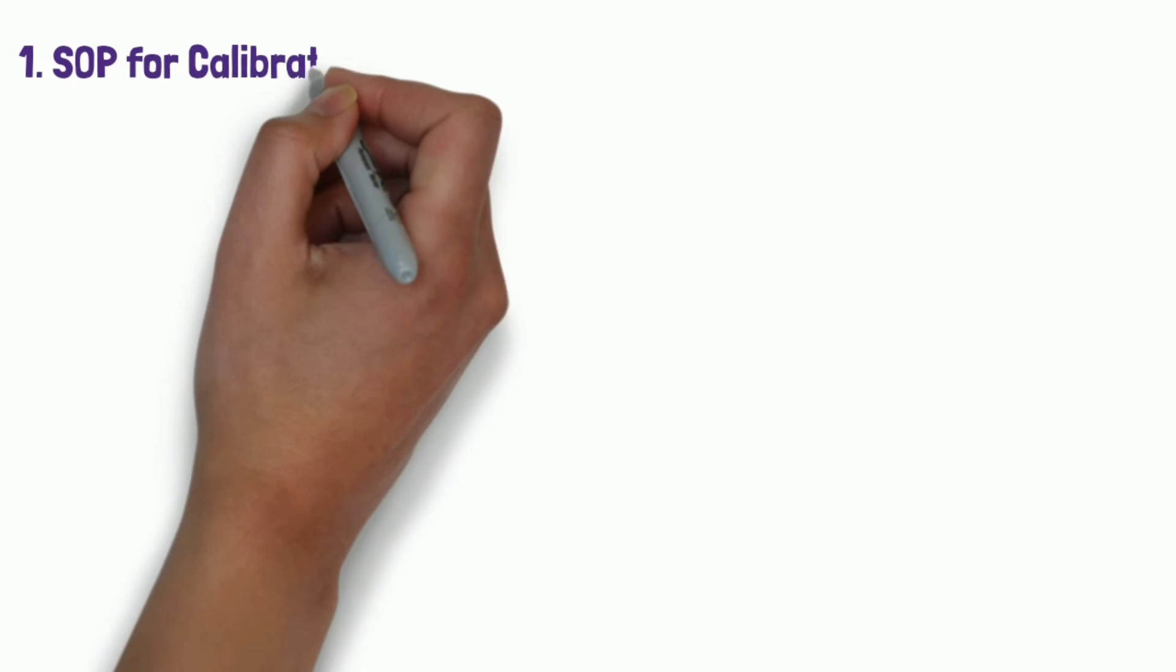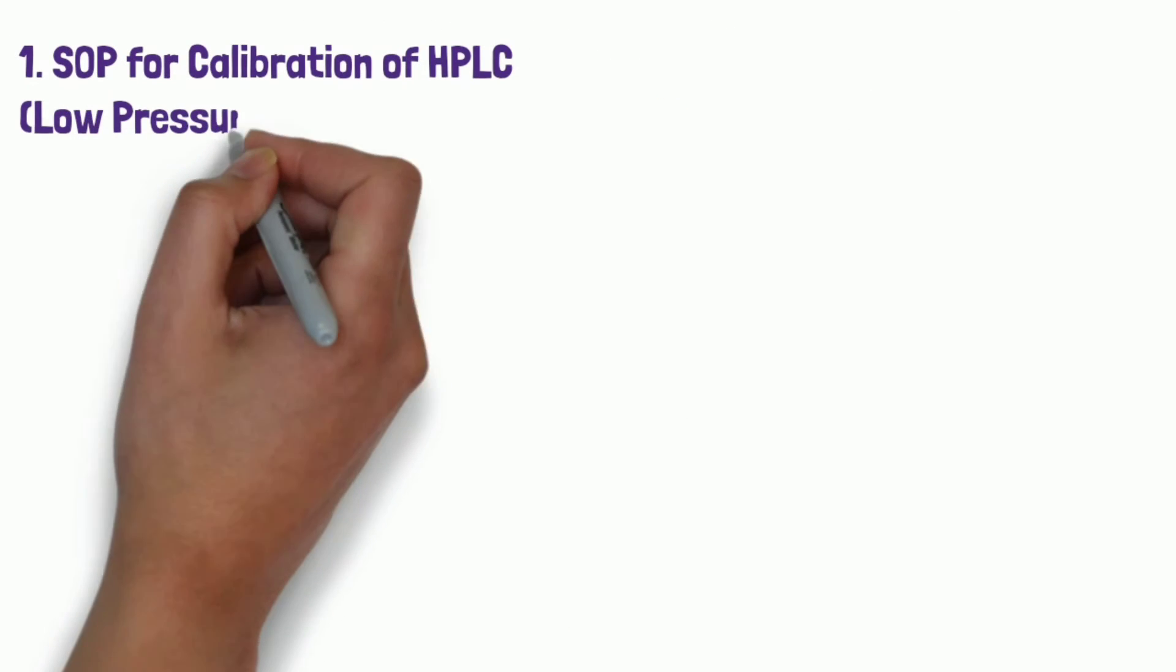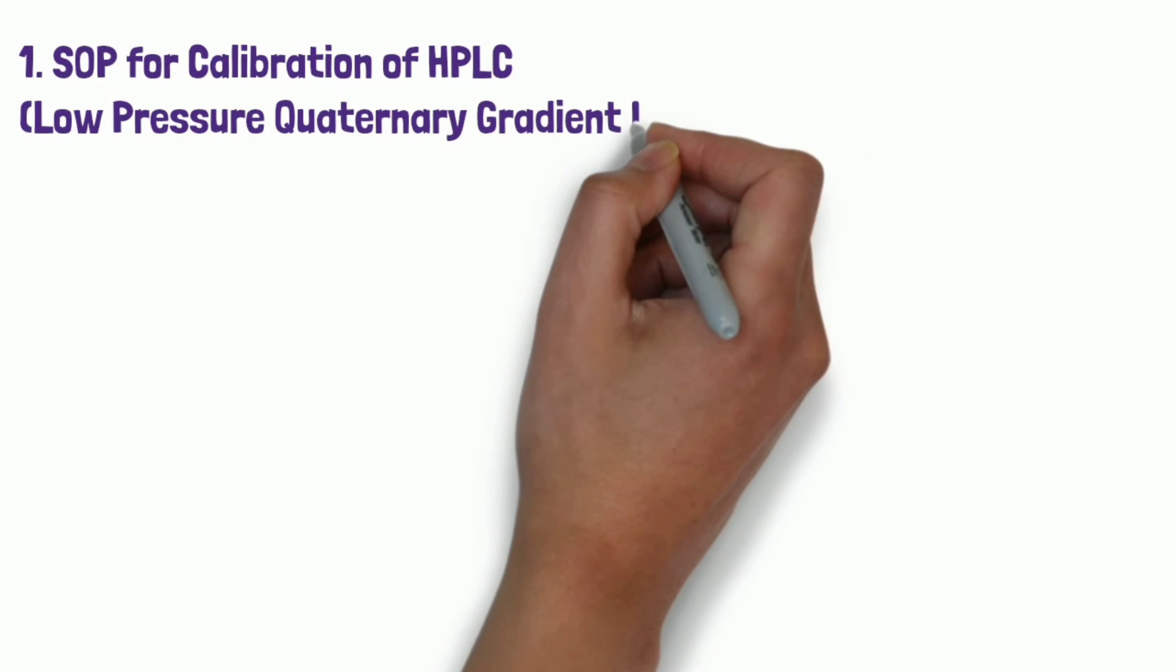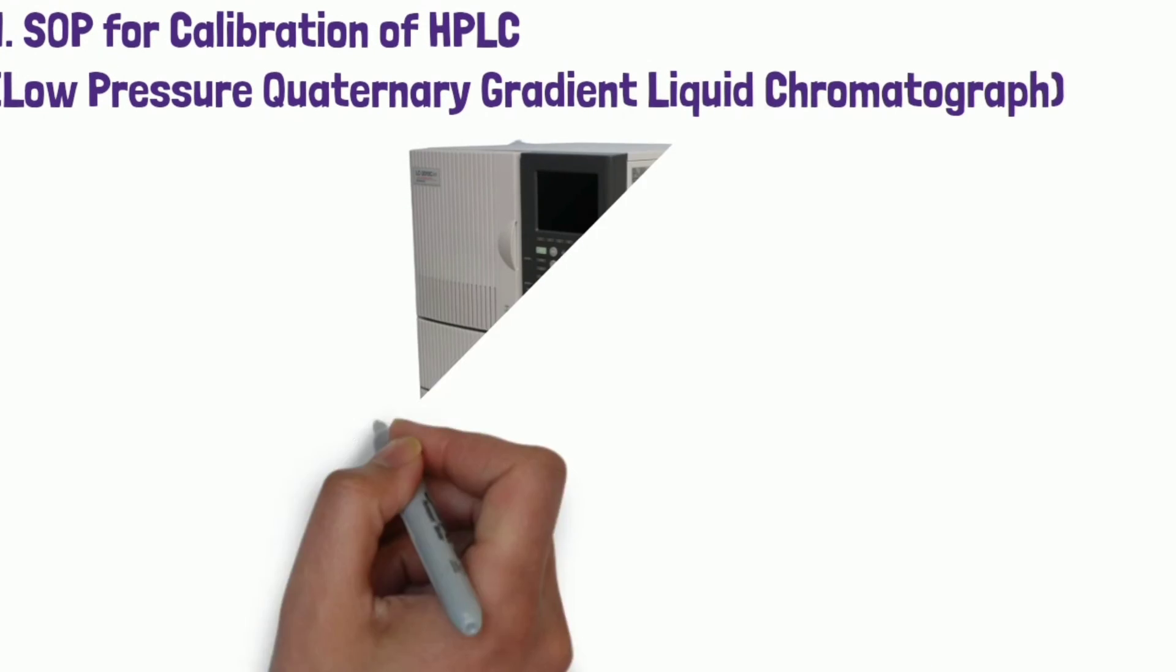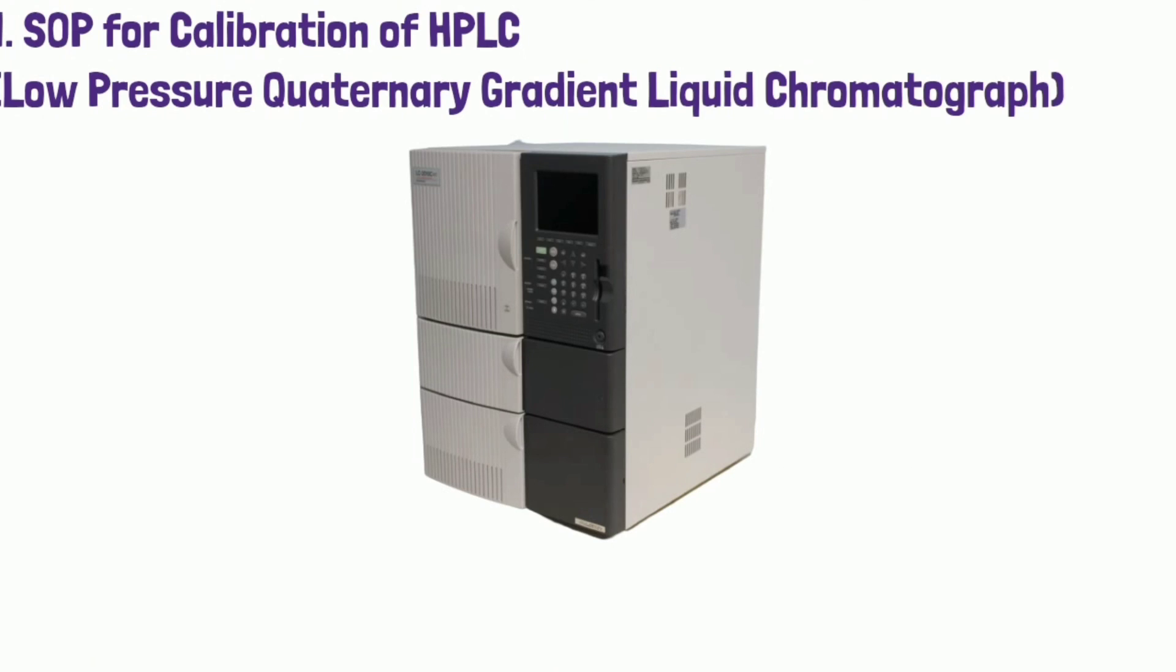So this was about today's lecture. In next lecture we will definitely cover SOP for calibration of HPLC for low pressure quaternary gradient liquid chromatography. What is the meaning of low pressure quaternary gradient liquid chromatography? This lecture is very important so that's why we have to take one another lecture for it. This is all about today's class. Thank you.